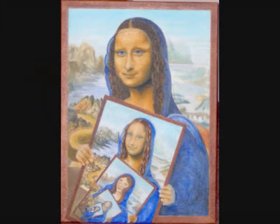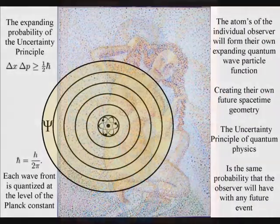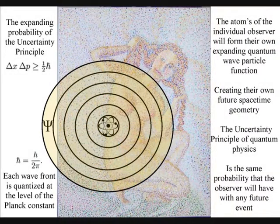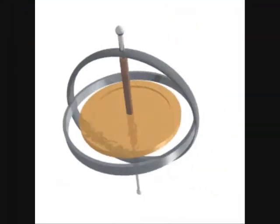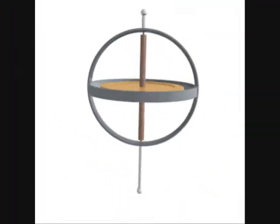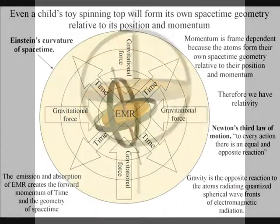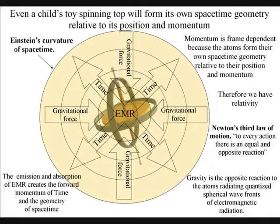Therefore, the infinity of time is an innate property of matter, whatever form or shape it takes, and this is why momentum itself is frame-dependent, and we have relativity. Even a child's toy spinning top will form its own space-time geometry, relative to its position and momentum, creating its own gravitational field.